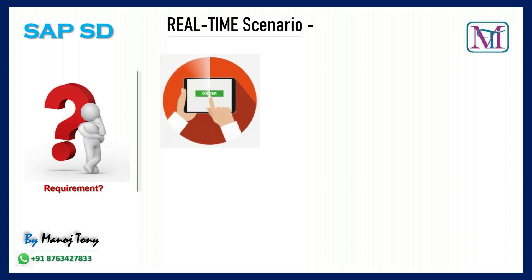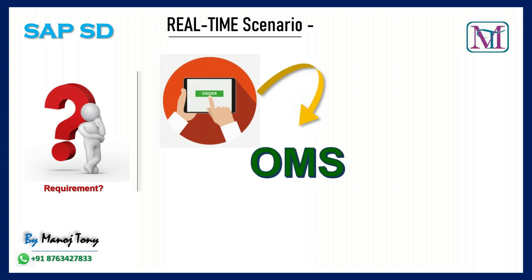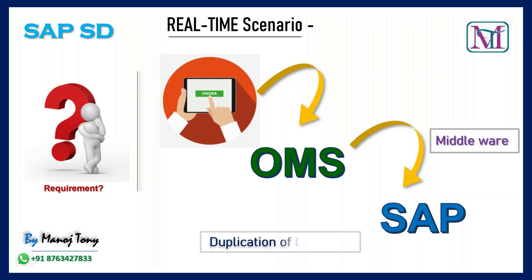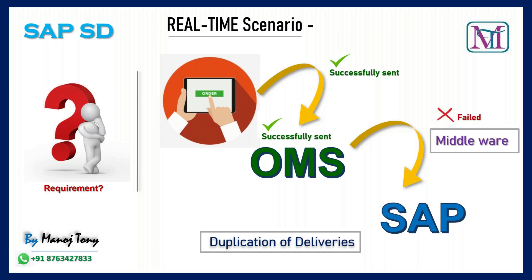In the standard process, a customer placed an order in a web portal. Then the order came to OMS — OMS is nothing but Order Management System. Then the order will be sent to the SAP system through middleware. A file is generated in OMS and the file format is sent to the SAP system for creation of sales orders through middleware.